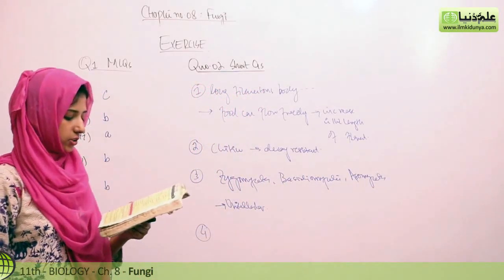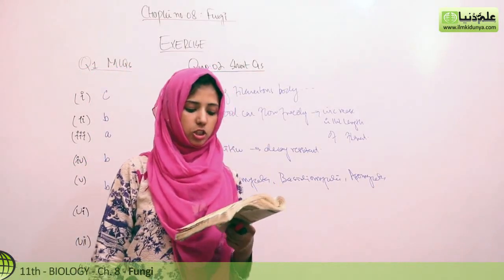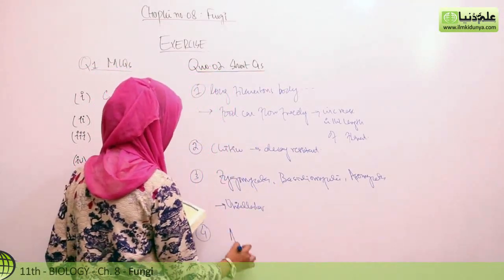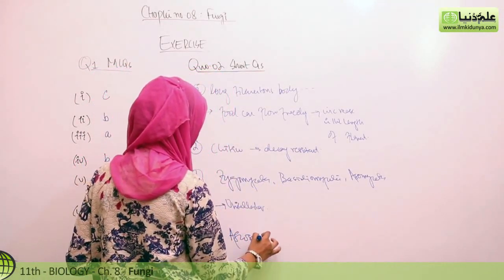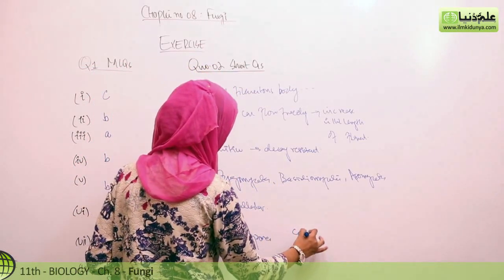Fourth question, name sexual ascomycetes. Sexual spores jo hai, they are ascospores. Asexual jo hai, they are conidia.